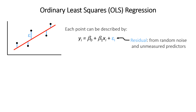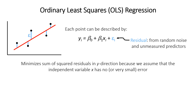This method is called ordinary least squares regression because the line is determined by minimizing the sum of squares of those residuals in the y direction. We treat x as our independent variable and assume it has no error, or at least that the error in the x direction is much smaller than in the y direction for our dependent variable.